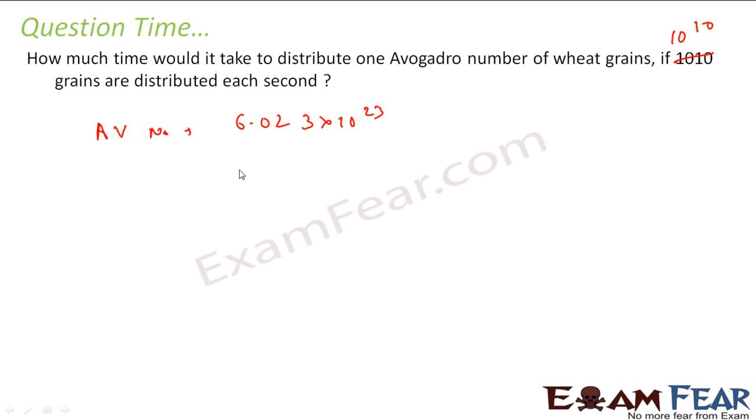Molecules, you can say. This number, and you have 10 to the power 10 per second. Time it will take, right? Because time into 10 to the power 10 per second will be this much total number. So you have this many numbers of wheat. And per second, you can distribute this many numbers. By this time, in seconds.